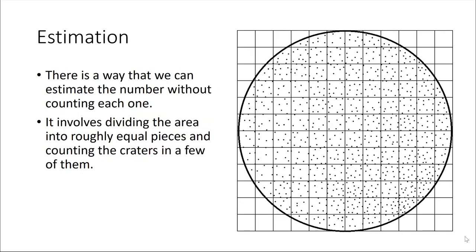There are ways to estimate the number of spots on this larger circle without having to count each one individually. This process involves breaking up the area of interest into a number of similarly sized pieces, and then we can count the number of spots within a few of them.